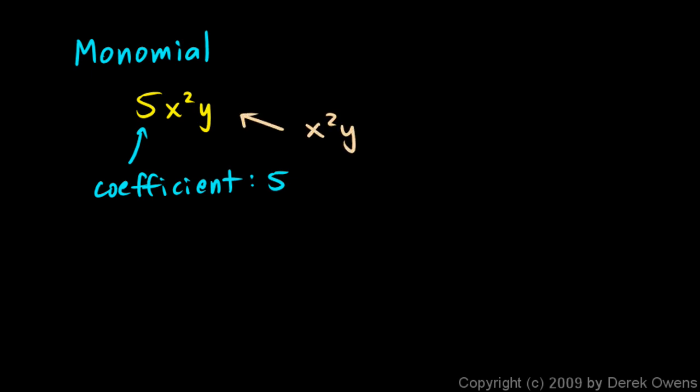You should know what a monomial is. Mon means one. A monomial is a polynomial with one term. For example, 5x squared y is a single term. The coefficient is 5 and the variable part is x squared y.